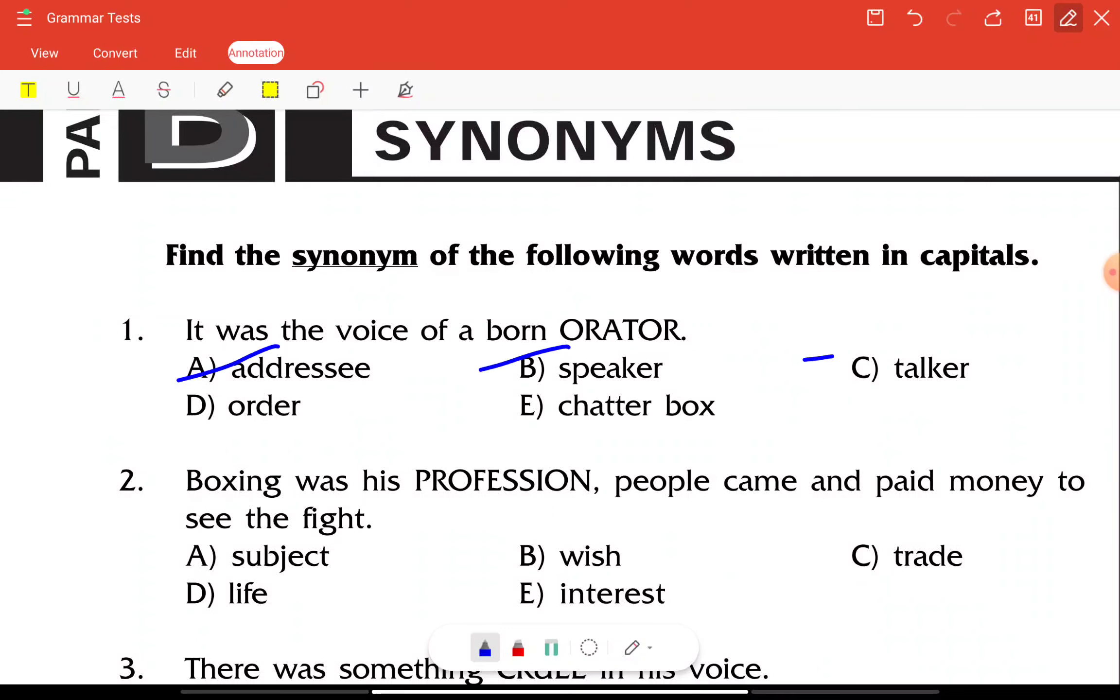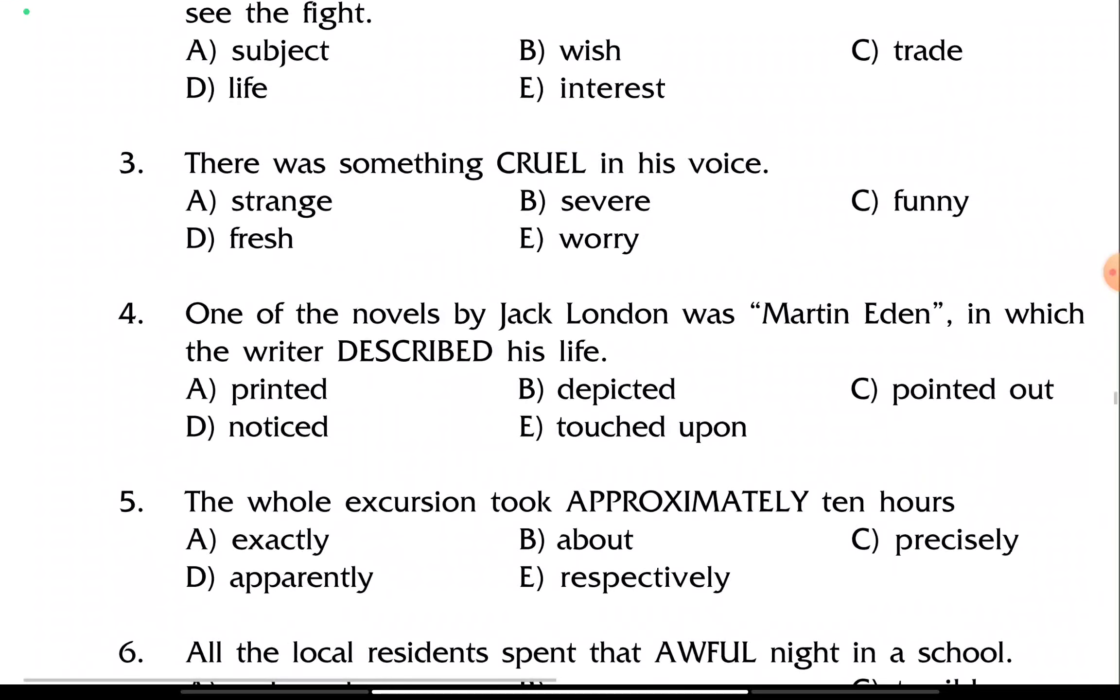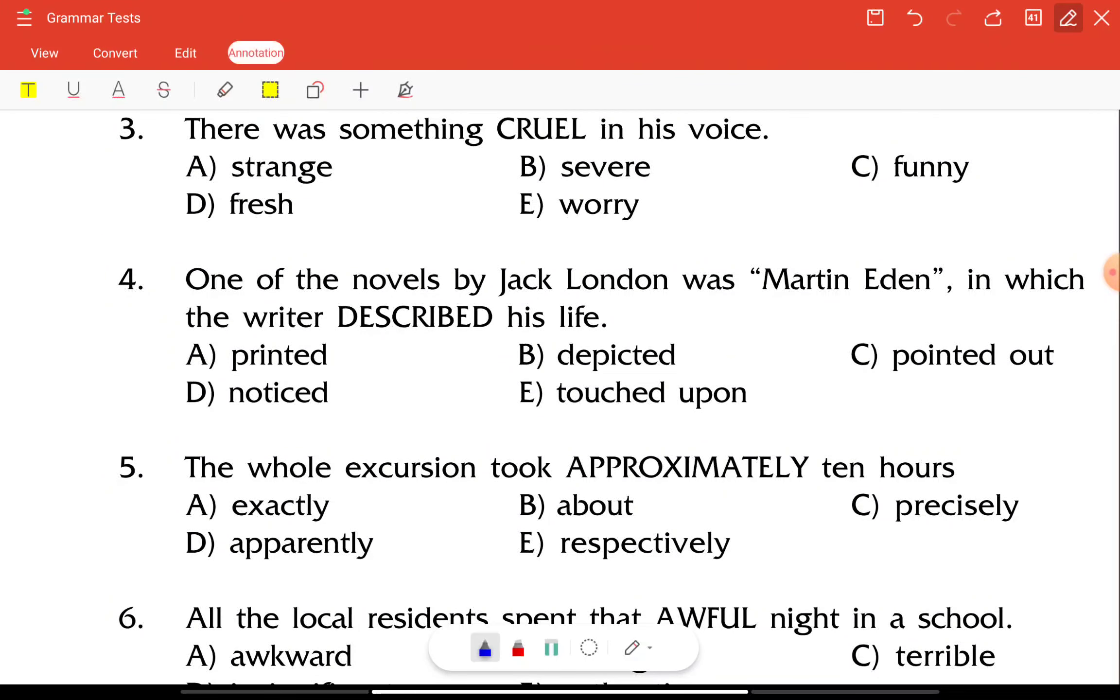Question 1: It was the voice of a born orator. There is addressee, speaker, talker, order, orator. Who will we say? One who is a good speaker. So option B, speaker, here is the right answer. Question 2: Boxing was his profession. People came and paid money to see the fight. Profession here, trade will be the synonym.